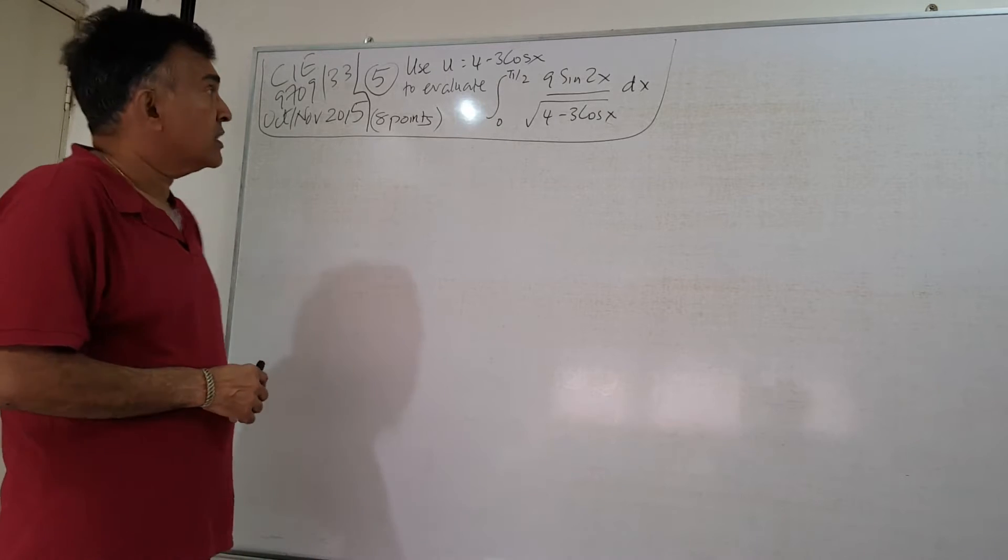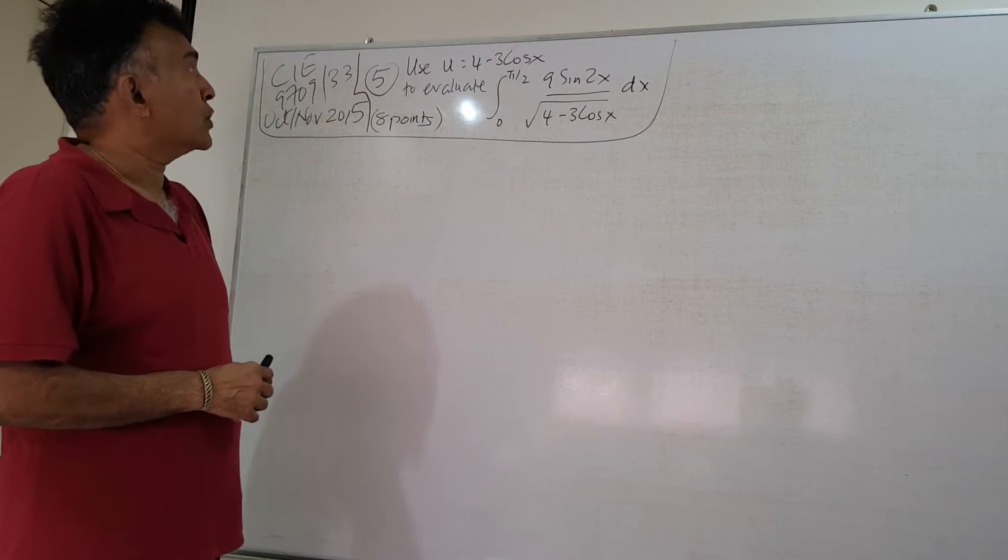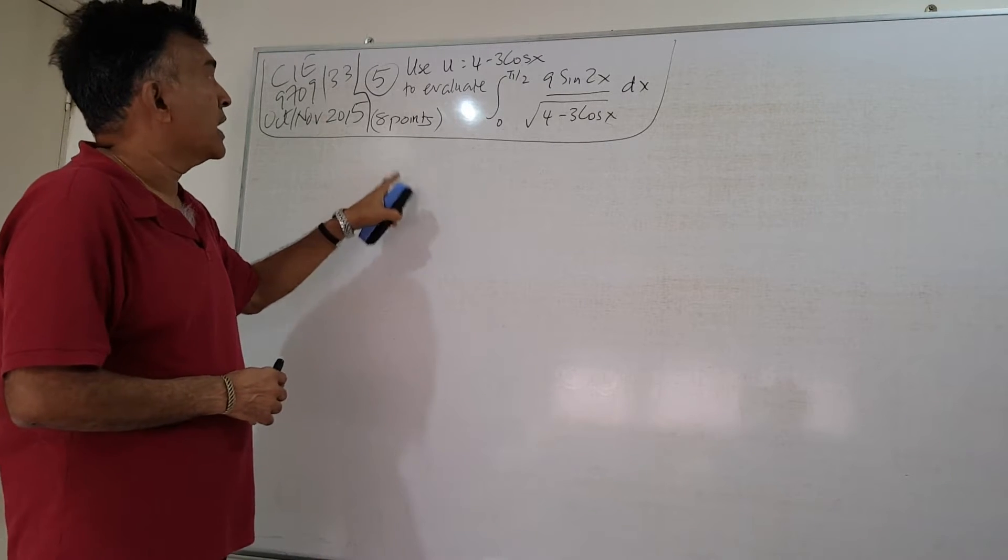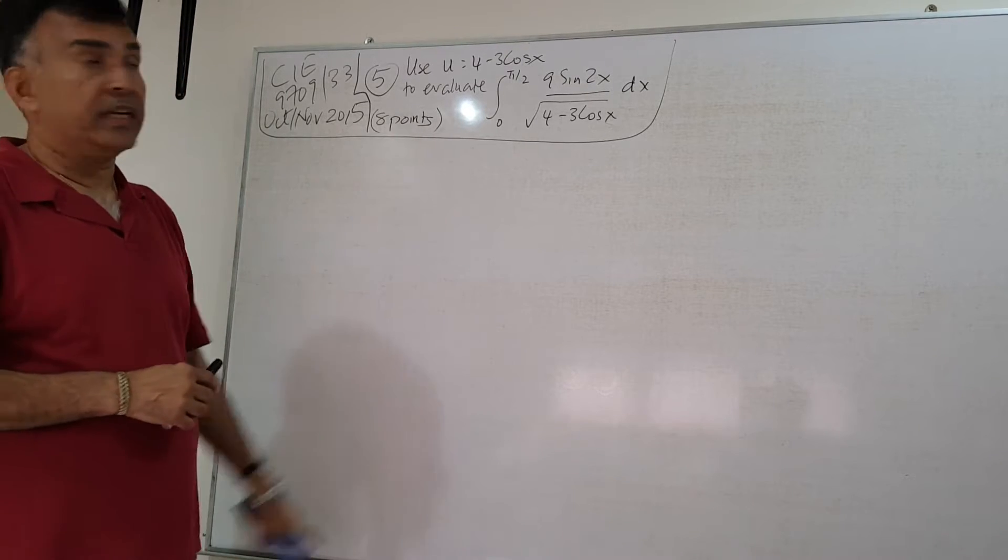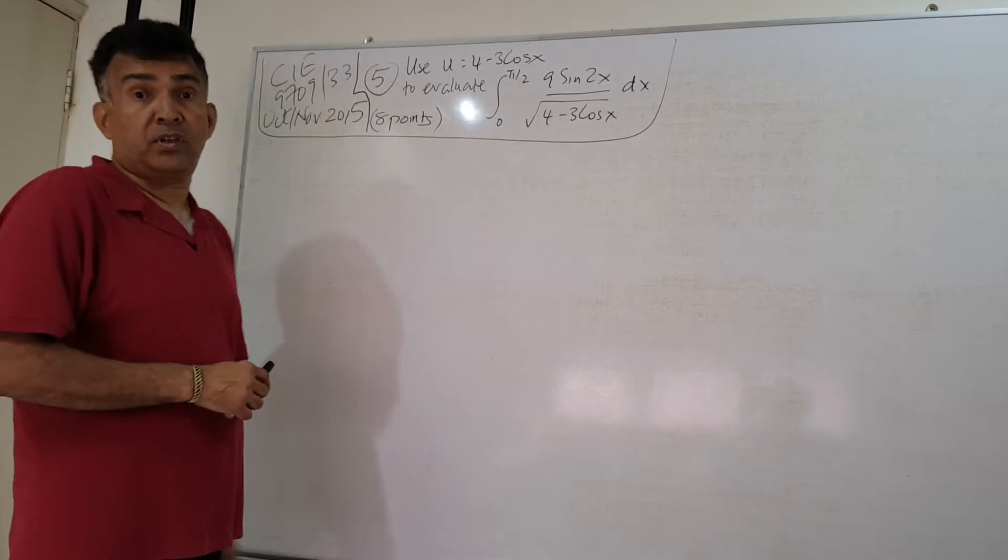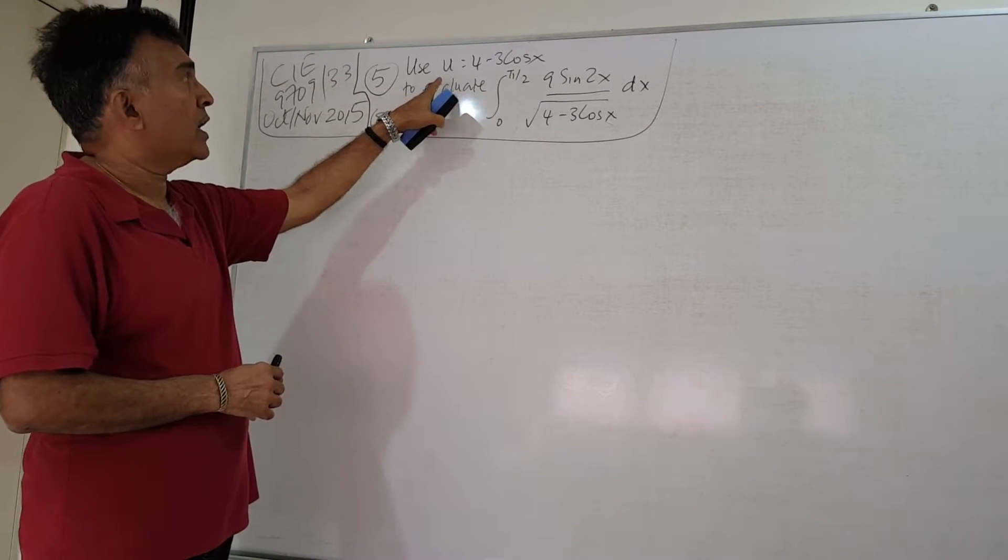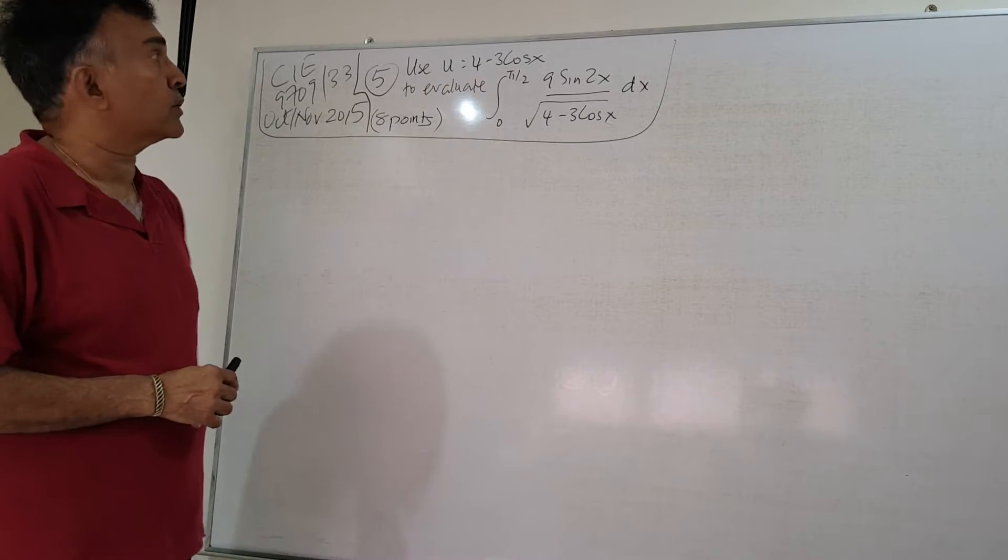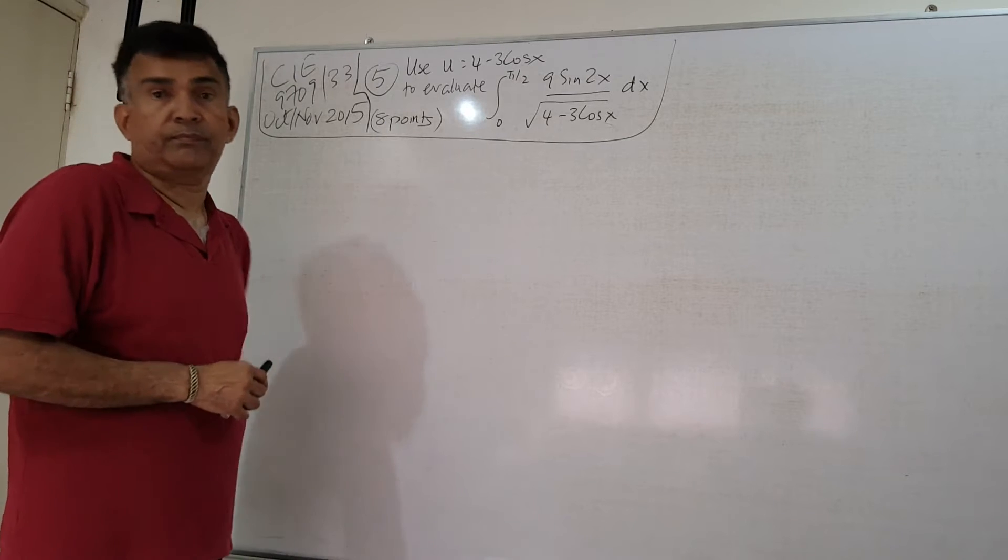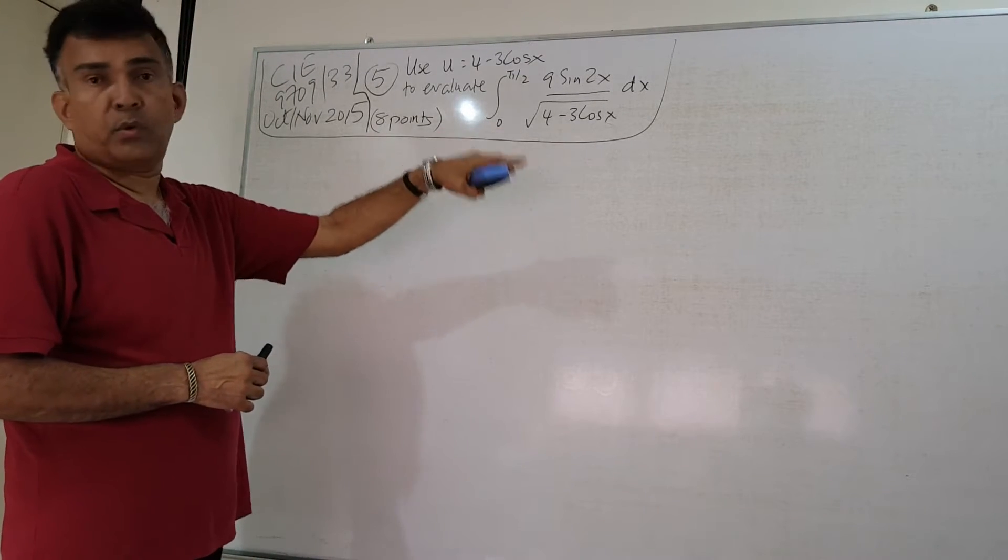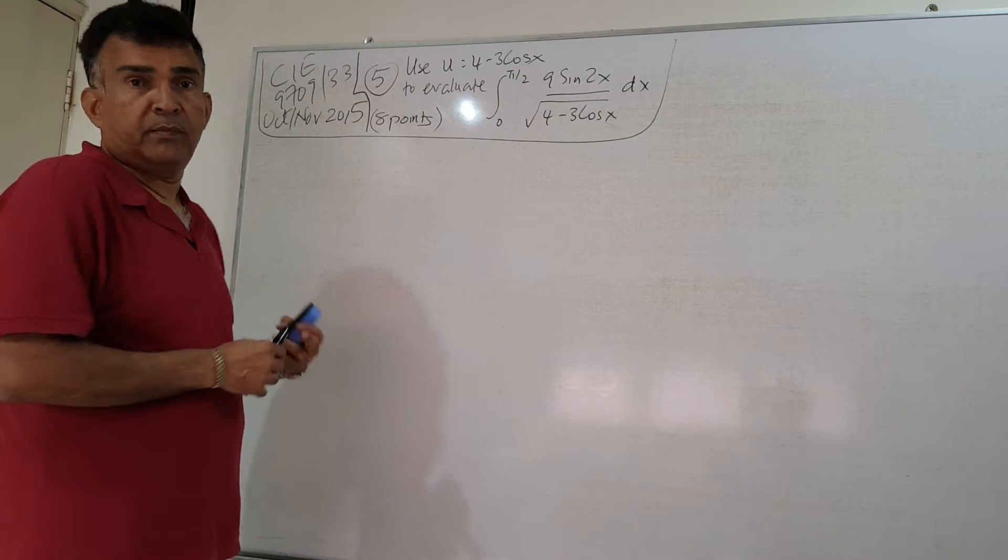It's a problem involving integration using the method of substitution. We are asked to use - before that, this problem with a good full solution, you get 8 points. It is a question that can give you 8 points, so it's pretty heavily weighted. So let's do it properly. This is asking you to use u equals 4 minus 3 cos x to evaluate this integral. So what I'm going to do is go through the question step by step and we'll get to the answer.